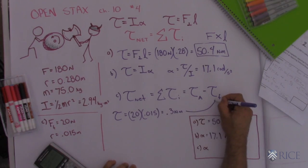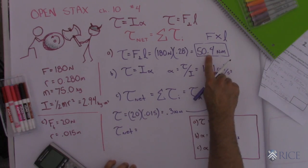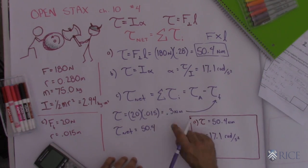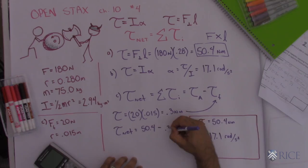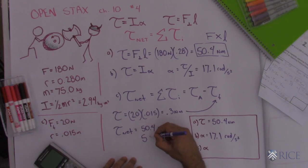So I'm going to plug that in for my frictional torque. I know that the net torque was the 50.4 that I started out with. That's the applied torque trying to speed it up minus the 0.3 Newton meters that's slowing it down gives me a net torque of 50.1.